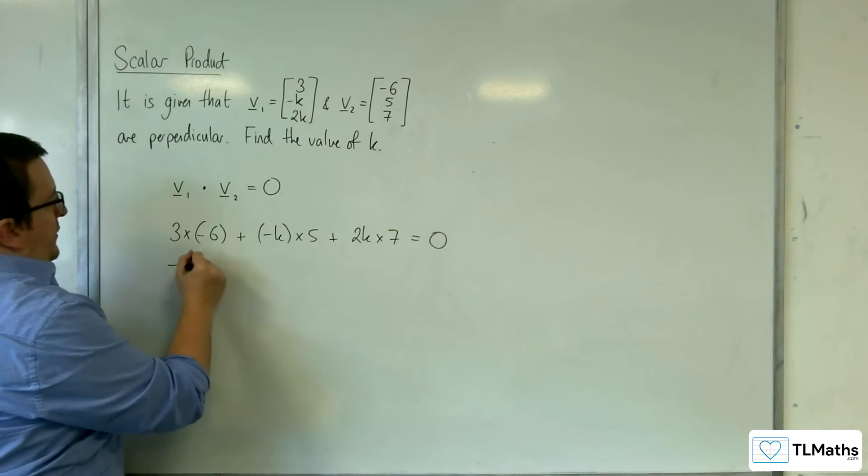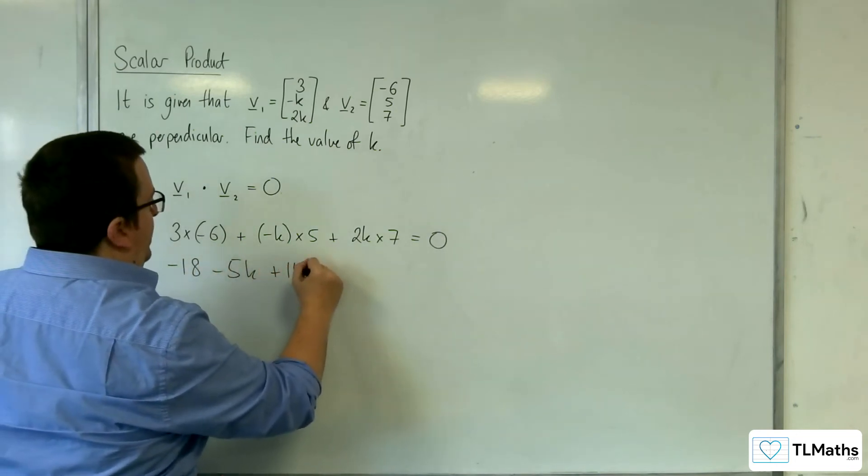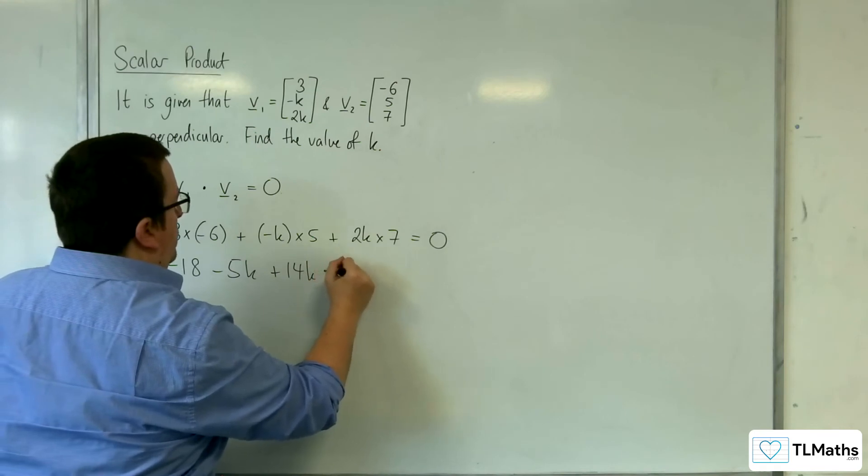So we have minus 18 take away 5k plus 14k must equal 0.